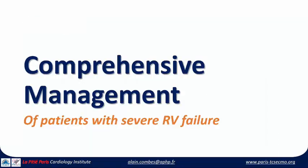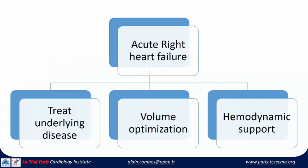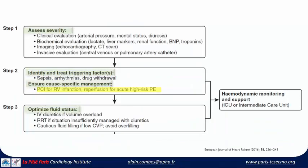The management of patients with severe RV failure should always start by treating the underlying disease. Think about volume optimization and hemodynamic support. First, assess severity — biochemical lactate is very important, imaging with echo is fundamental, and CT scan may also be important. Identify and treat the triggering factors, and especially consider the specific etiology.